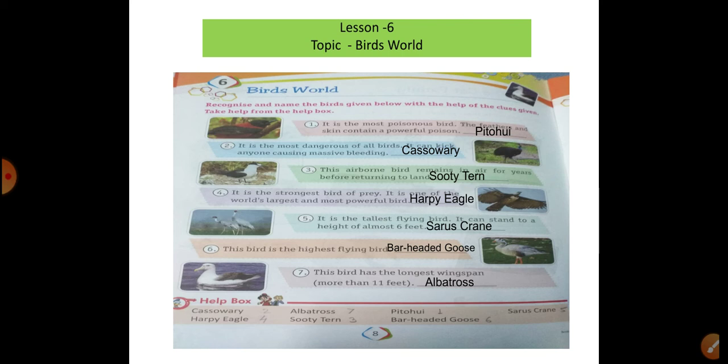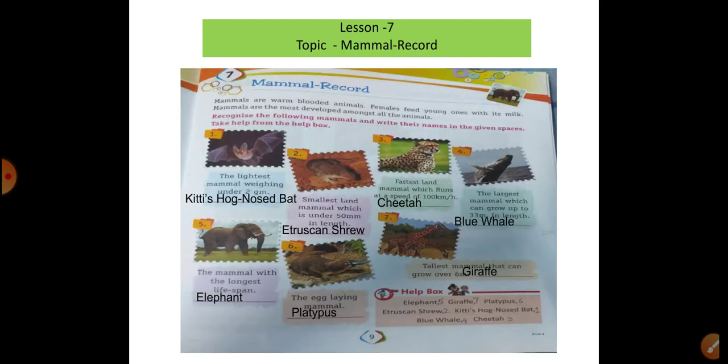Lesson number 6 is about birds — words from the helping list, numbering also given. Write down: first is a peafowl, second is cassowary, third is shoebill stork, fourth is harpy eagle, fifth is sarus crane, sixth is bar-headed goose, seventh is albatross. Write these down with the help of the helping list. See and observe — next is lesson number 7.